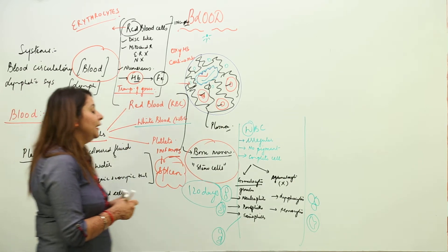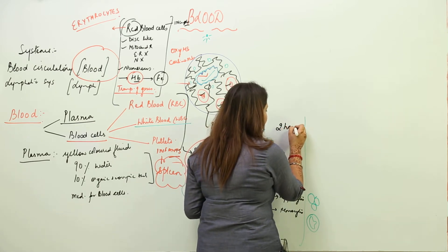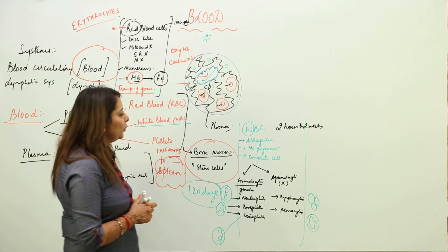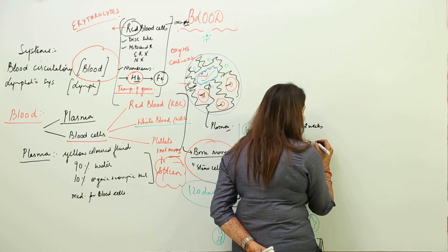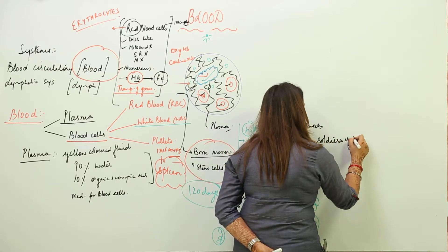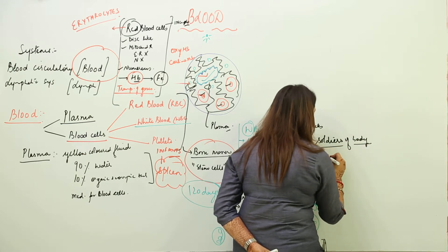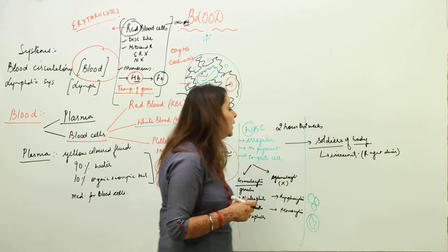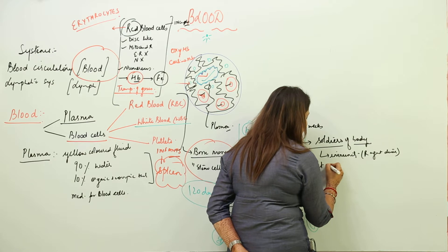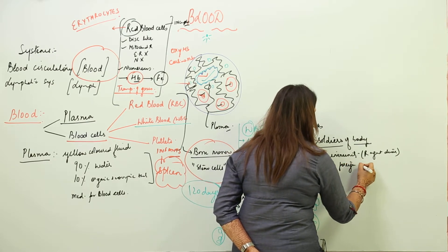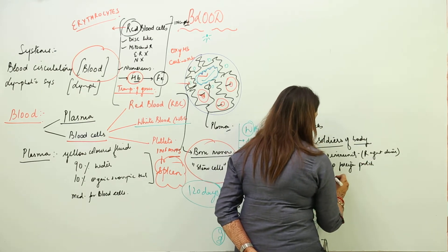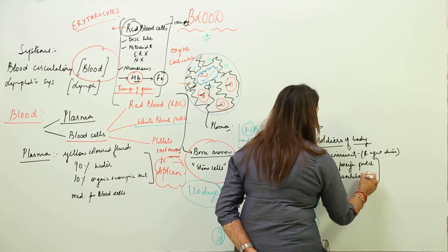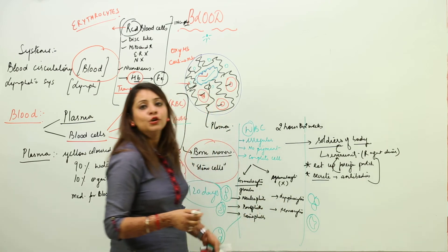The lifespan of WBCs varies between two hours to two weeks. The function of WBCs is to protect our body — they are called the soldiers of the body because they provide immunity, which is resistance against disease. They protect us either by engulfing foreign particles that cause infection, or by secreting certain substances called antibodies that kill those foreign particles.